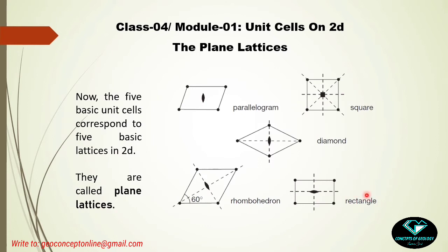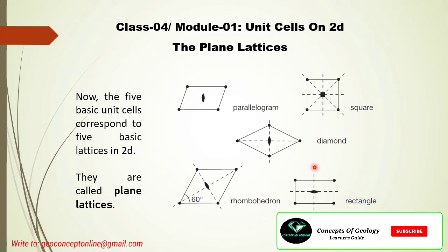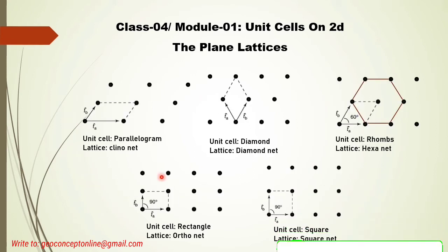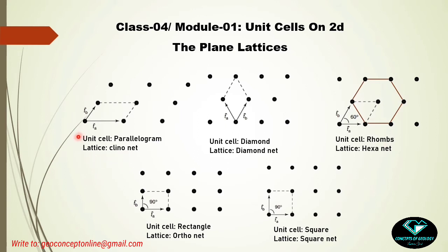These five shapes correspond to five basic lattices in two dimensions, called plane lattices. The first shape is the parallelogram and the corresponding lattice is called the clinonet. In clinonet, we have two translation vectors ta and tb where ta is not equal to tb, and the angle between these two vectors is a general angle — no specific value like 30° or 60° is fixed. The second lattice is called the diamond net, where the unit cell is a diamond shape.